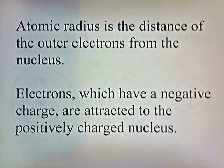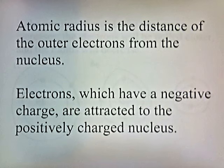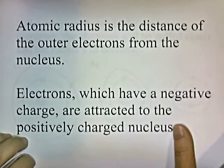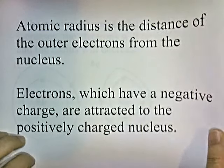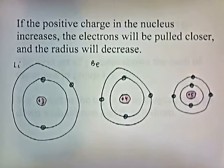Atomic radius is the distance of the outer electrons from the nucleus. Electrons, which have a negative charge, are attracted to the positively charged nucleus. If the positive charge in the nucleus increases, the electrons will be pulled closer and the radius will decrease.